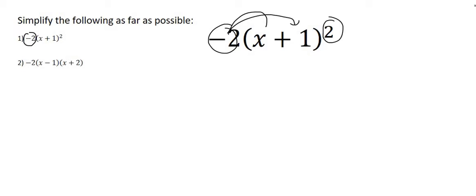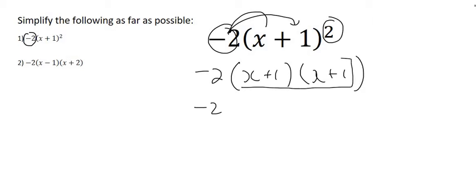So what I would say is you can almost ignore the minus 2, so we'll just leave it out in the front for now. This x plus 1 to the power of 2, remember that means you have to use two brackets. Now we'll leave this minus 2 out in the front and we'll go multiply all of this together.